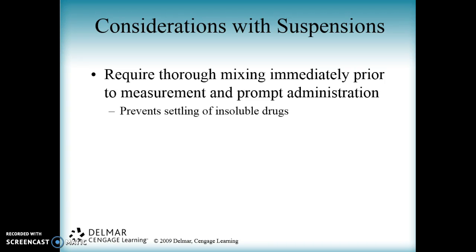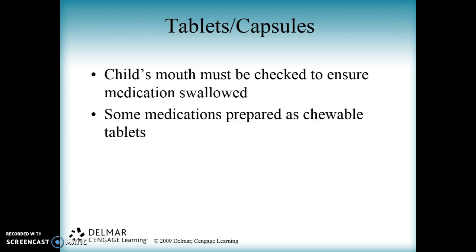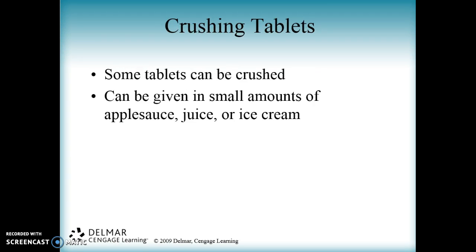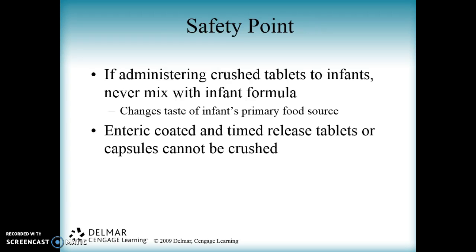Some of the things also discussed in this chapter are tablets and capsules. When giving a tablet or capsule you have to make sure the child actually swallows it — a lot of times kids have trouble swallowing them, which is why we use liquids. We do have chewable tablets, which helps. We can crush some tablets and add them to things like applesauce or juice, but you have to read the labels carefully because not all tablets can be crushed. If they're enteric coated or time-released, you cannot crush them because it destroys that characteristic of the medication.